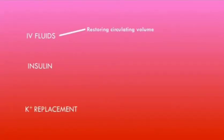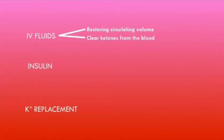There are three key principles for the management of DKA: intravenous fluids, insulin, and potassium replacement. Intravenous fluids will help restore the circulating volume, which is very important as patients in DKA are very dehydrated with reduced blood volume. IV fluids will also help clear ketones from the blood, and by clearing ketones this will help to correct the acidosis.